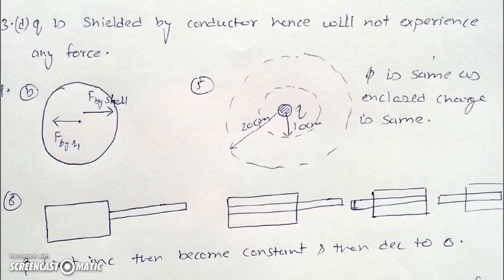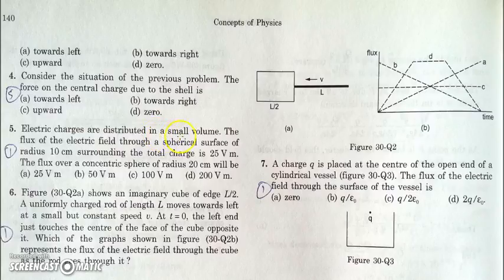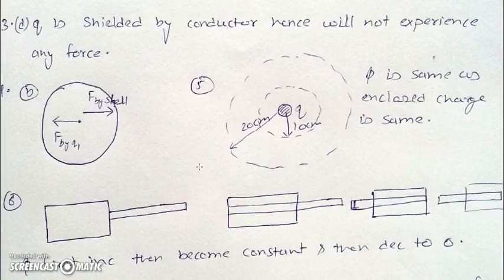In the next part, there is a Gaussian surface which encloses some small volume of charge. The radius of the surface is 10 centimeter and the flux through it is 20 volt meter. As the net charge enclosed, look at the diagram.